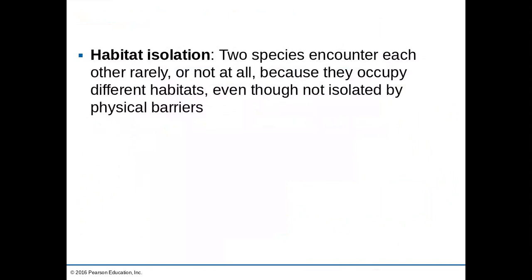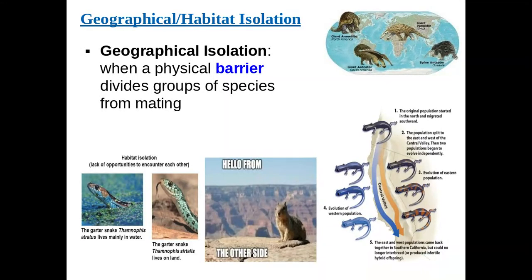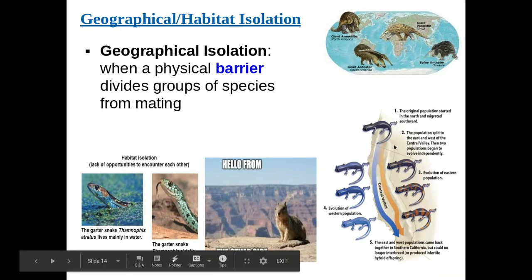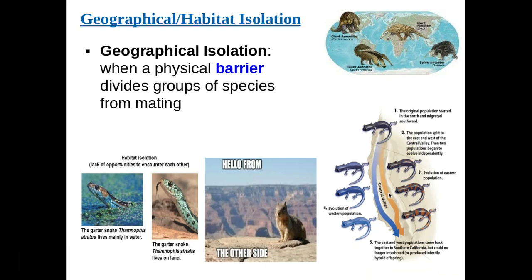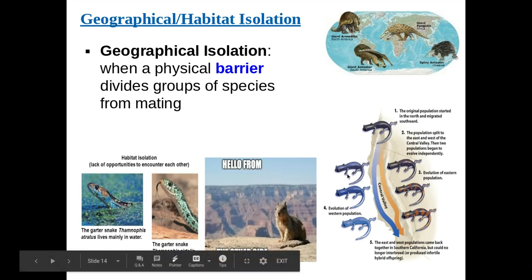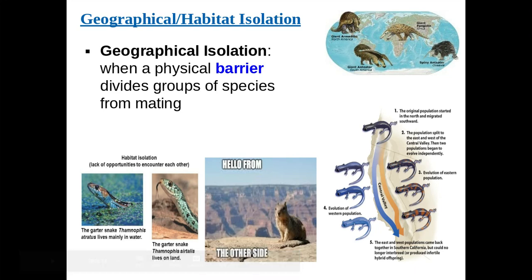Habitat isolation, also known as geographic isolation, is when two species encounter each other rarely or not at all because they have different habitats. Even without a physical barrier, they live so far away that they start to develop unique characteristics. For example, we see these lizards — originally a dark lizard, but some migrated west and some east. The western ones developed certain characteristics and the eastern ones developed others, and when they came back together in Southern California, they could no longer interbreed. Rivers, mountains, and oceans can contribute to this.